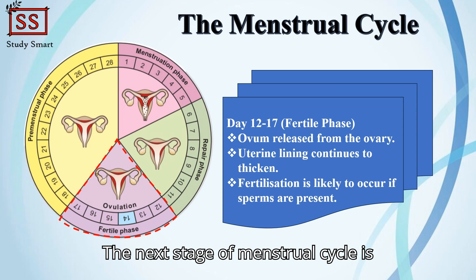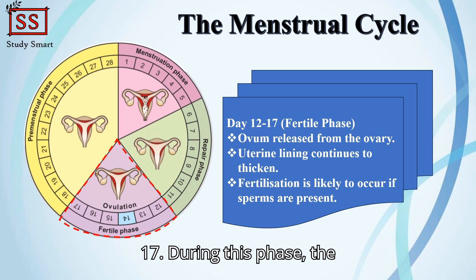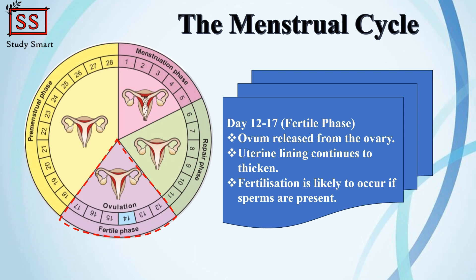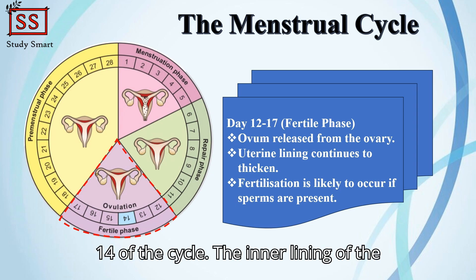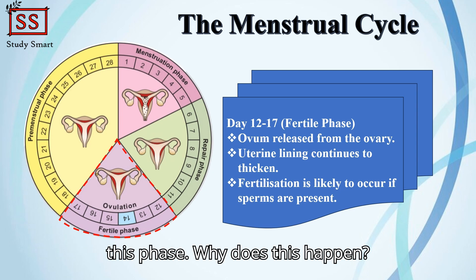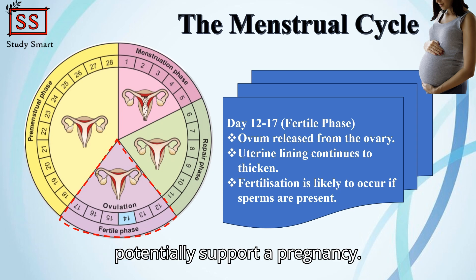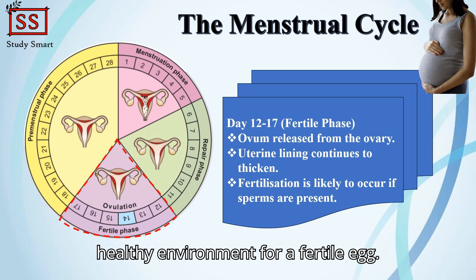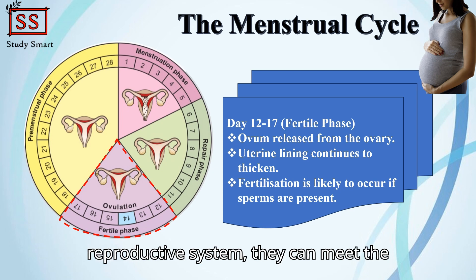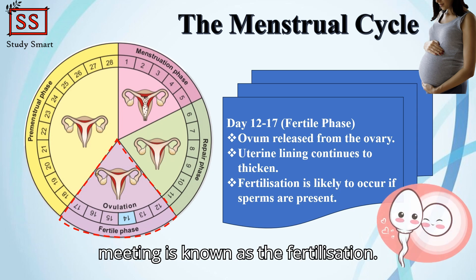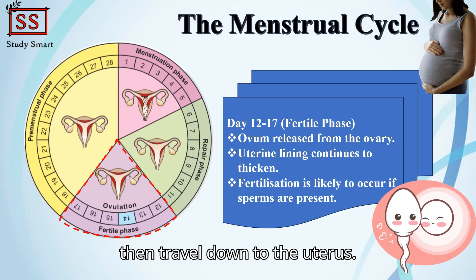The next stage of the menstrual cycle is known as the fertile phase, which takes place around day 12 to day 17. During this phase, ovulation takes place — an ovum is released from one of the ovaries, usually around day 14. The inner lining of the uterus continues to thicken as the body prepares to support a potential pregnancy, providing a healthy environment for a fertile egg. If a sperm enters the female reproductive system, it can meet the released egg in the fallopian tube — this meeting is known as fertilization. If a sperm successfully fertilizes the egg, it forms a zygote which then travels down to the uterus.